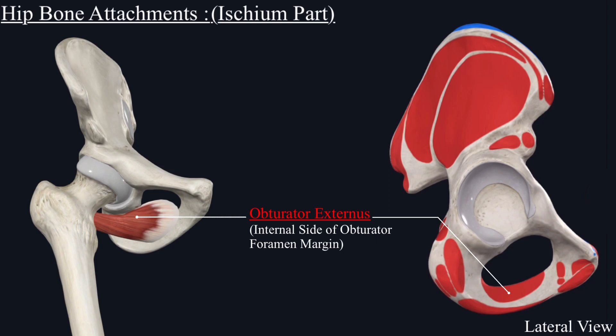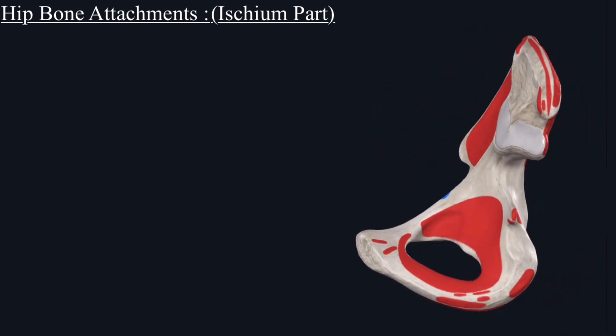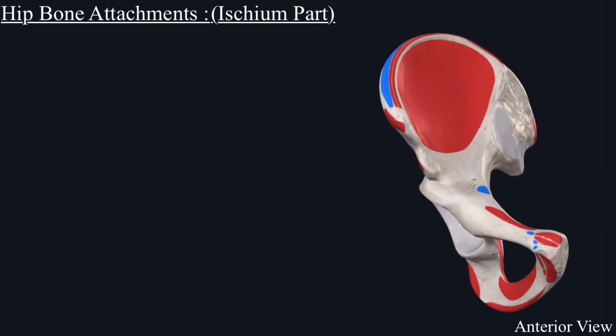This is all about those muscles that are attached to the hip bone. For more videos on the lower limb, please check out the playlist shown on the screen.